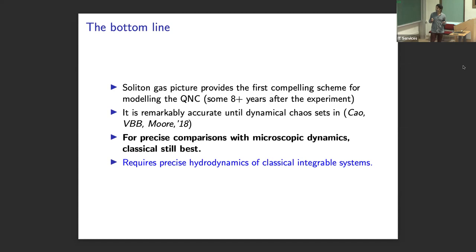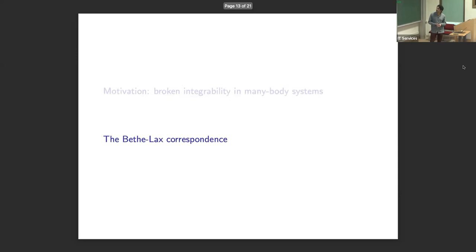So for precise tests of this equation, classical systems are still best. And this requires a precise understanding of the hydrodynamics of classical integrable systems. Now, both Herbert and Benjamin showed how precise that understanding can get. Let me present a slightly different model, which is the Calogero model, where I think the story becomes exceptionally clear.